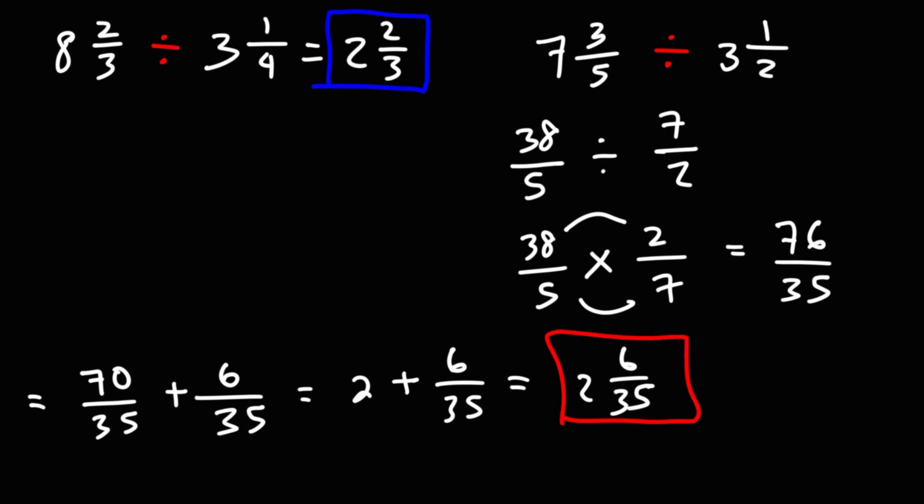So that's how you could divide two mixed numbers together. It's by converting each mixed number into an improper fraction using the phrase keep change flip to convert the division problem to multiplication. And then when you get your final answer as an improper fraction, convert that back to a mixed number.